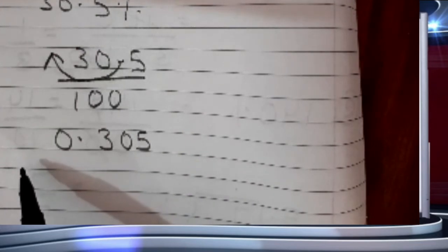Part D: 30.5%. To remove the percent sign I write upon 100. Now dividing by 100 means shifting the decimal 2 places to the left, so the answer is 0.305.